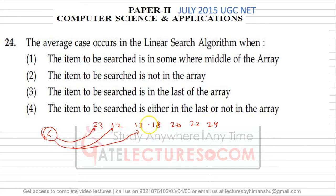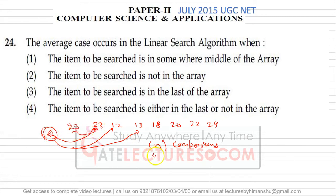If this element is found at the last position, you are making n comparisons. For example, if you want to search 23 and it is found at the first position, this will take order of one time. If you want to search 18 and find it in the middle of the array, you have to make n by two comparisons.